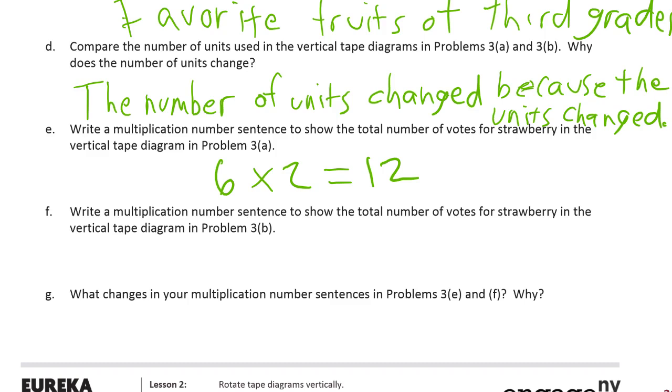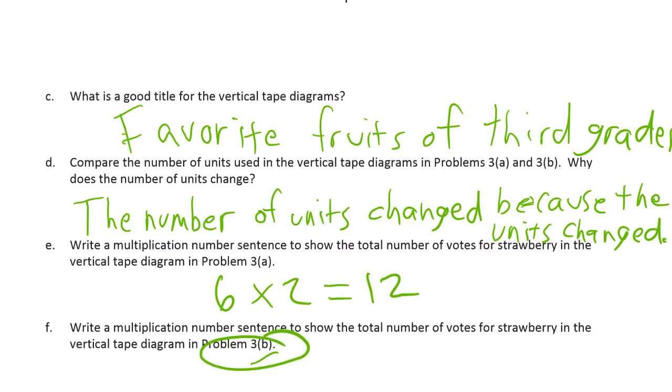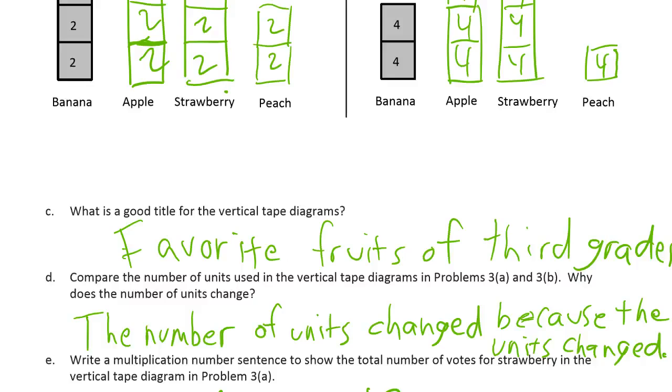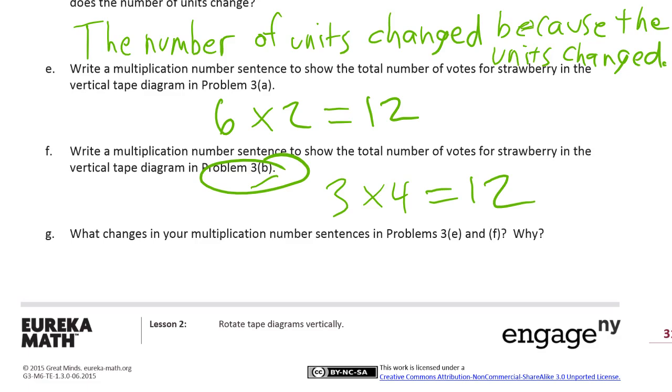Write a multiplication number sentence to show the total number of votes for strawberry in the vertical tape diagram in problem 3b. So remember, for this module, you really have to read the questions carefully or you're going to be lost. This is 3b, which means you got to look at the fours. We looked at the twos for strawberry. Now we're looking at the fours for strawberry. There's three fours, so it's going to be three times four equals twelve.